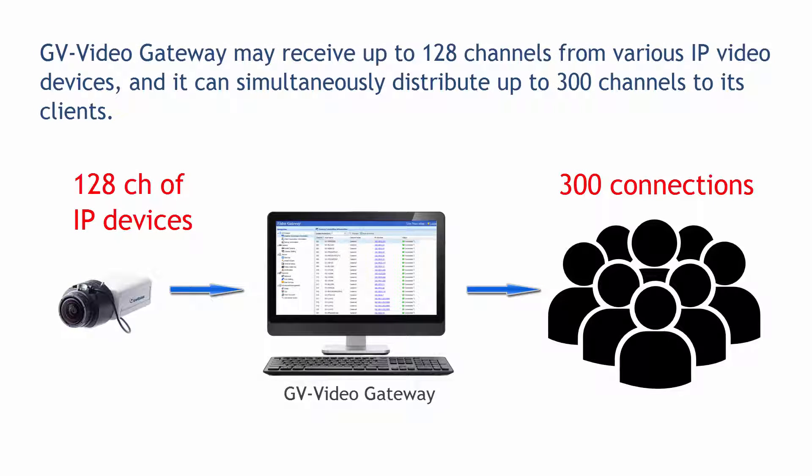GV Video Gateway may receive up to 128 channels from various IP video devices, and it can simultaneously distribute up to 300 channels to its clients.